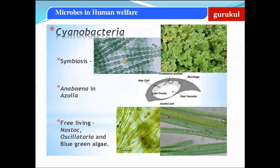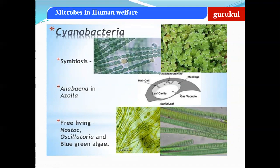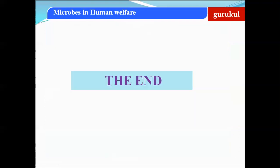The third group used as biofertilizers are cyanobacteria — Nostoc, Oscillatoria, and Anabaena — which like Rhizobium are able to fix atmospheric nitrogen and enrich the soil. Anabaena grows as a symbiont in the leaves of a fern called Azolla. Azolla is now grown on a large scale and used as a biofertilizer especially for paddy fields.